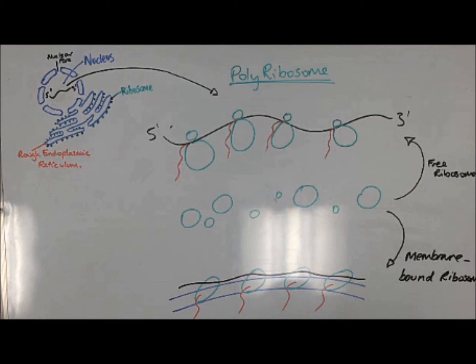Free ribosomes translate mRNA into proteins that are taken up by the cytoplasm and other organelles for the functioning of the cell.